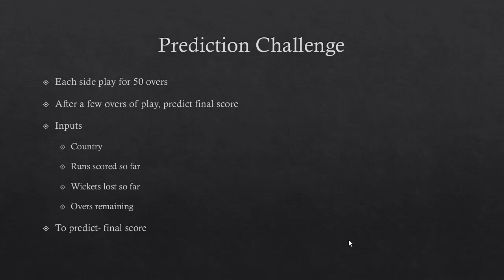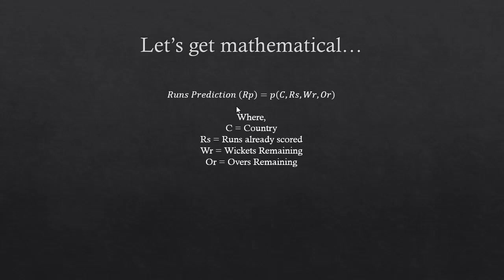This sounds like any typical business challenge — for example, given that YTD sales are 7 million, we had 300 customers and sold 75,000 products, what would be the year-end total? We can only solve these kinds of problems if we define them mathematically. So: predicted runs RP could be a function P which takes four inputs — country, runs scored, wickets remaining, and overs remaining. If we can find such a function, our job is done.